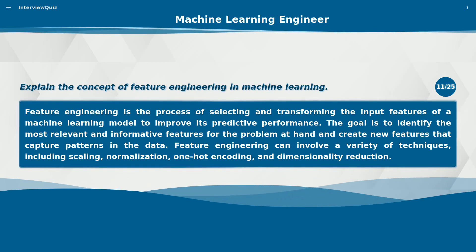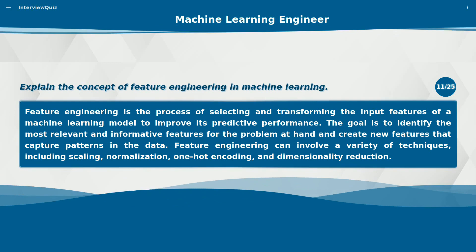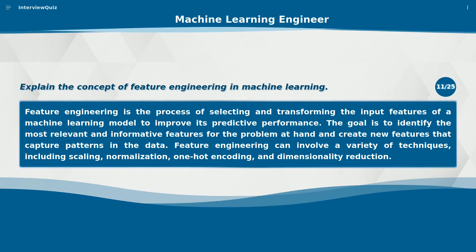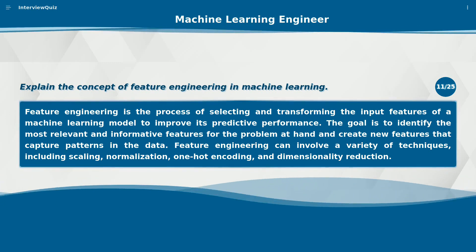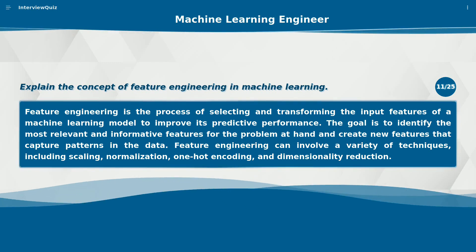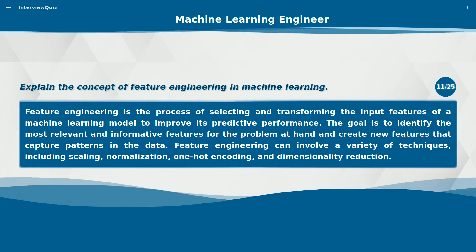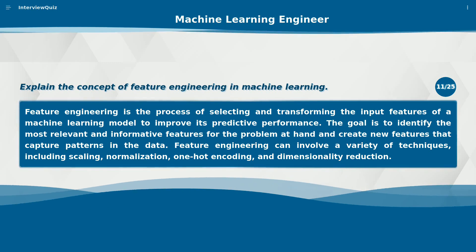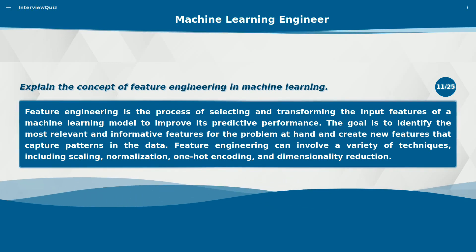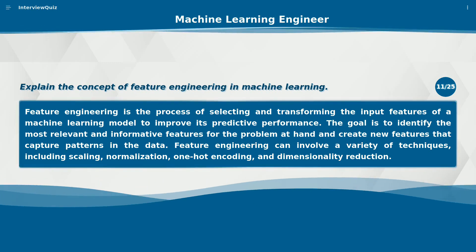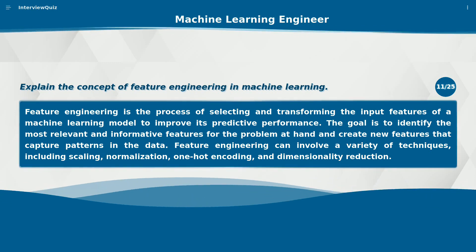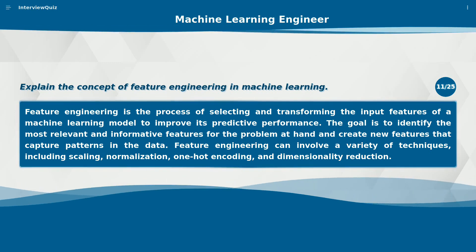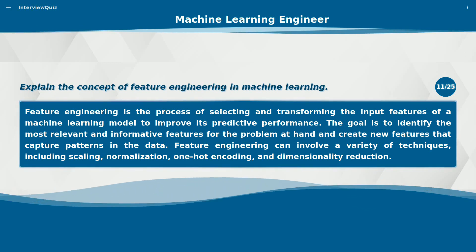Explain the concept of feature engineering in machine learning. Feature engineering is the process of selecting and transforming the input features of a machine learning model to improve its predictive performance. The goal is to identify the most relevant and informative features for the problem at hand and create new features that capture patterns in the data. Feature engineering can involve a variety of techniques, including scaling, normalization, one-hot encoding, and dimensionality reduction.